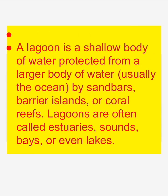What is a lagoon? A lagoon is a shallow body of water protected from a larger body of water, usually the ocean, by sandbars, barrier islands, or coral reefs. Lagoons are often called estuaries, sounds, bays, or even lakes.